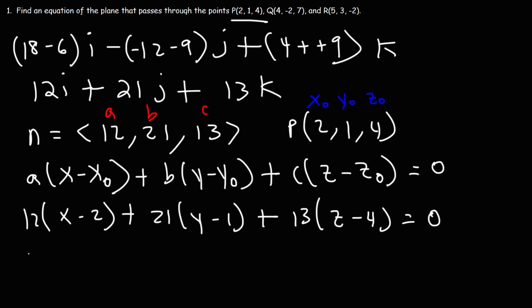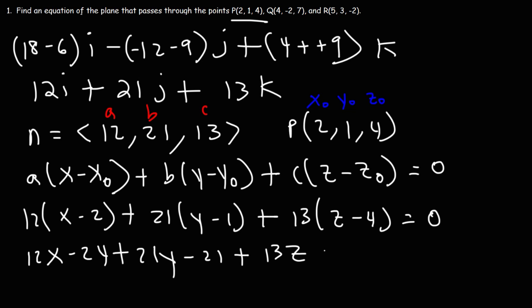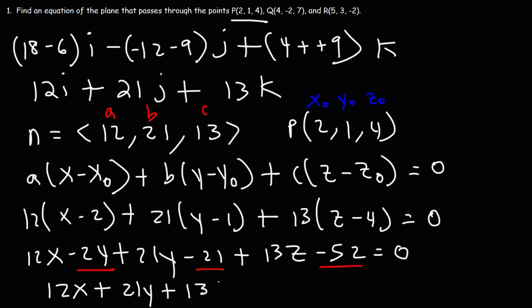Distributing gives us 12x minus 24, plus 21y minus 21, plus 13z minus 52, which equals 0. Combining the constant terms: negative 24 plus negative 21 is negative 45, and negative 45 plus negative 52 is negative 97 on the left side, which becomes positive 97 on the right. So the final answer is 12x + 21y + 13z = 97. This is the equation of the plane that contains those three points.